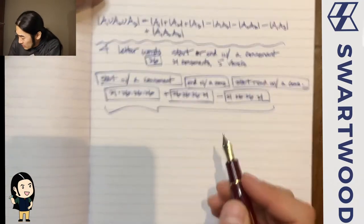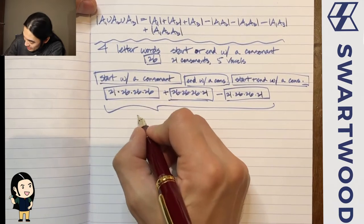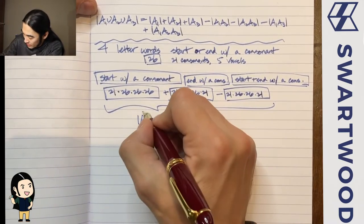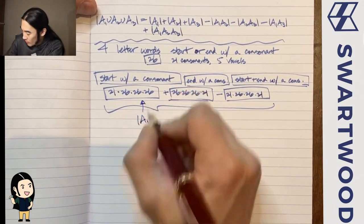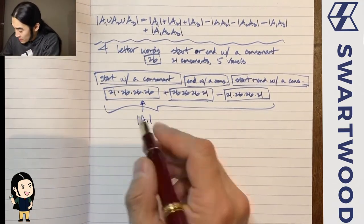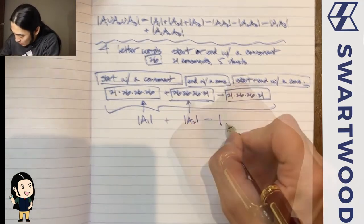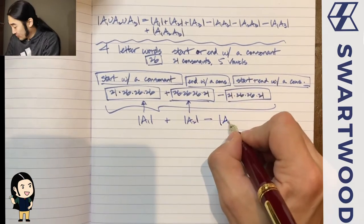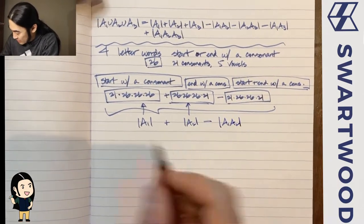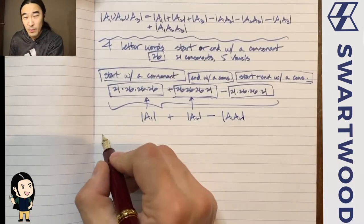To formalize this: A1 is all four-letter words that start with a consonant, A2 is all four-letter words that end with a consonant, and we take out their intersection. Now I want to make problems a bit more interesting.